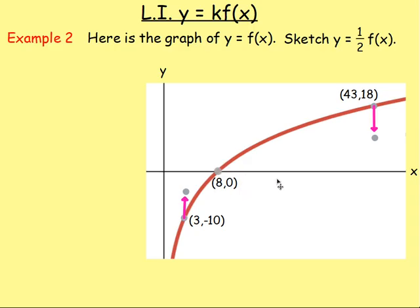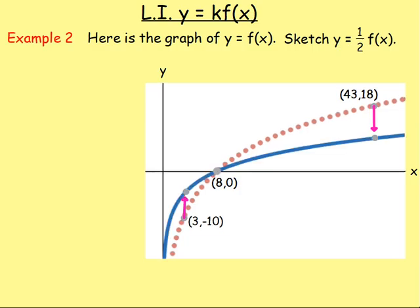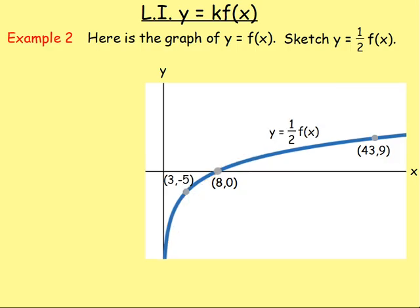0, sorry, 8, 0 will just stay as 8, 0. If you have these points then and draw the line going through that, you would have something that looks more like that. And if you add in these points, instead of 3, negative 10, you'd have 3, negative 5. Instead of 43, 18, half the 18 and we'd have 43, 9. Remember the x value stays and we're just compressing this graph here. So we're halving this y value and that is what you would get.